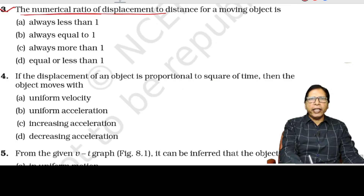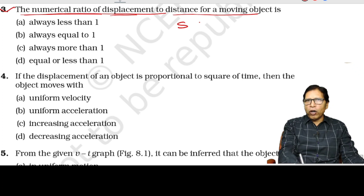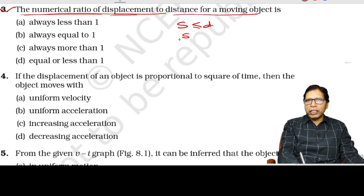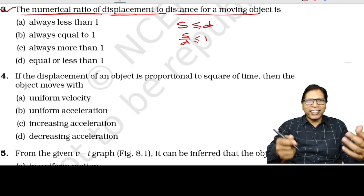Question number 3: the numerical ratio of displacement to distance for a moving object — displacement is always less than or equal to distance, therefore displacement divided by distance is less than or equal to 1.